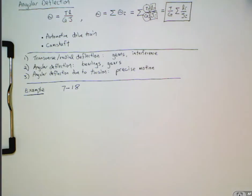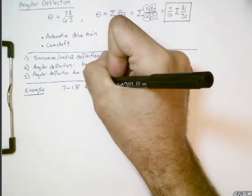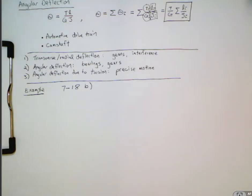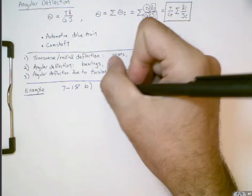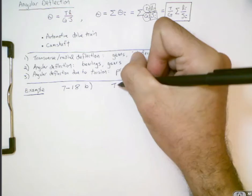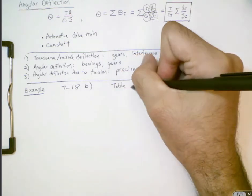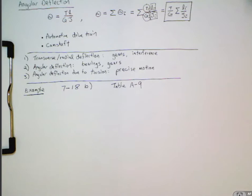So we're only going to look at part B of this problem and look at deflection. And here we're really just going to focus on the angular deflection. So if we have a look at table A-9, this provides us with beam deflection formulas that are exactly what we need in this case. So this is case 6.